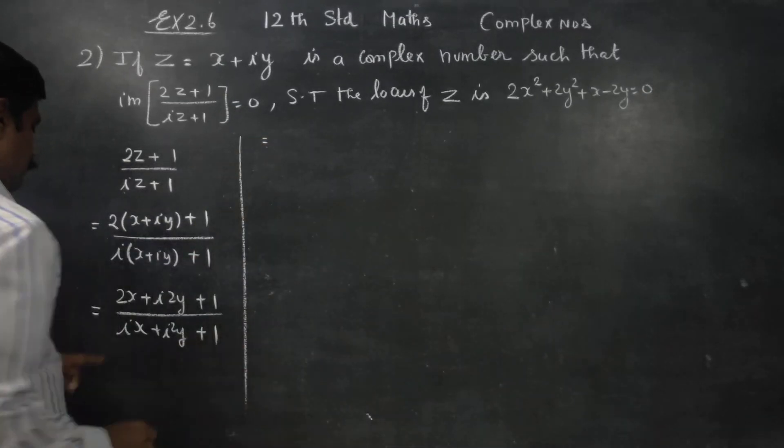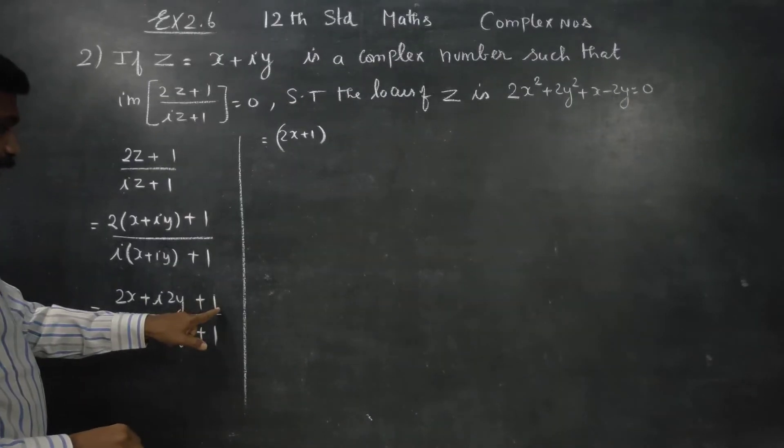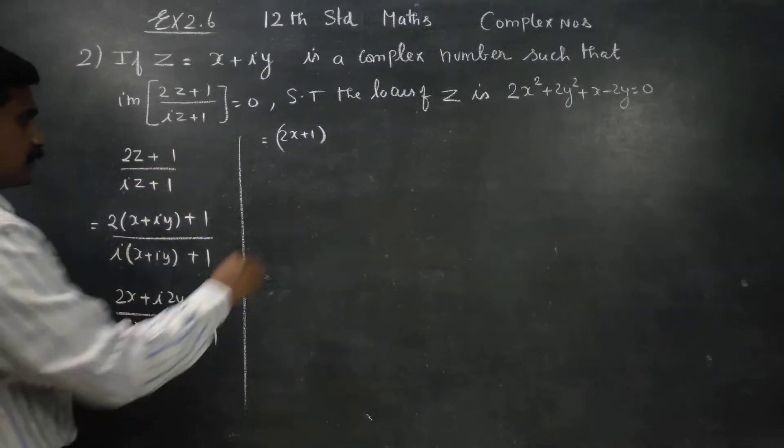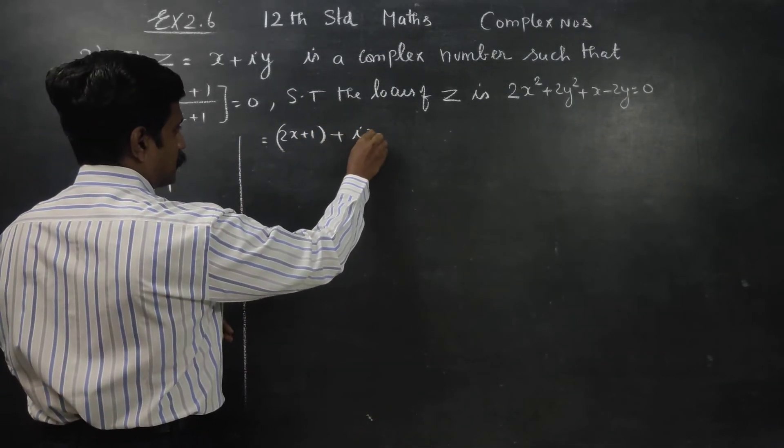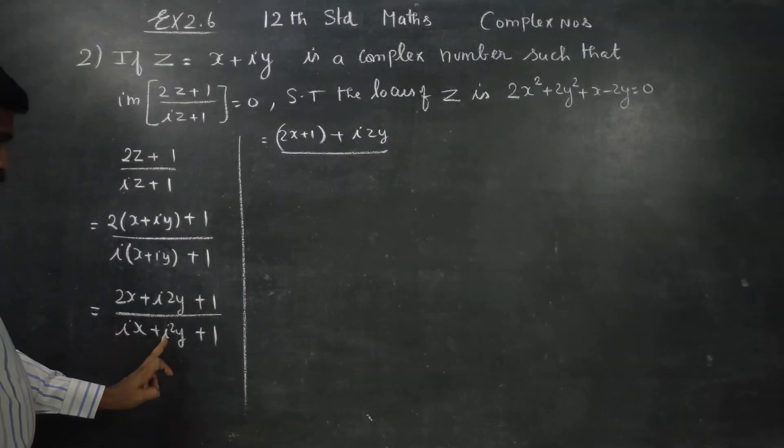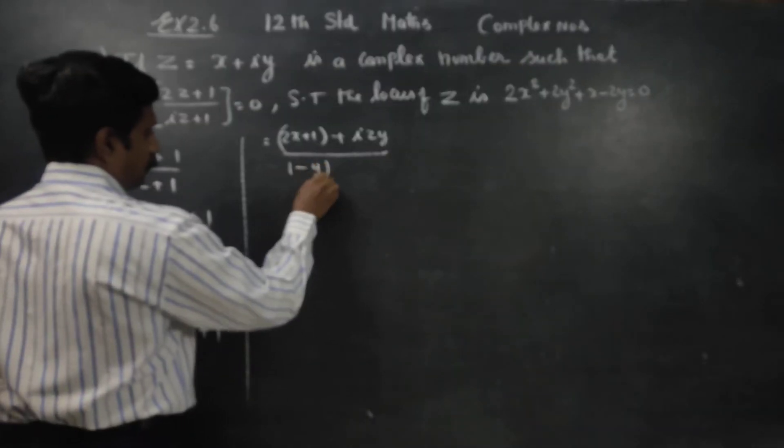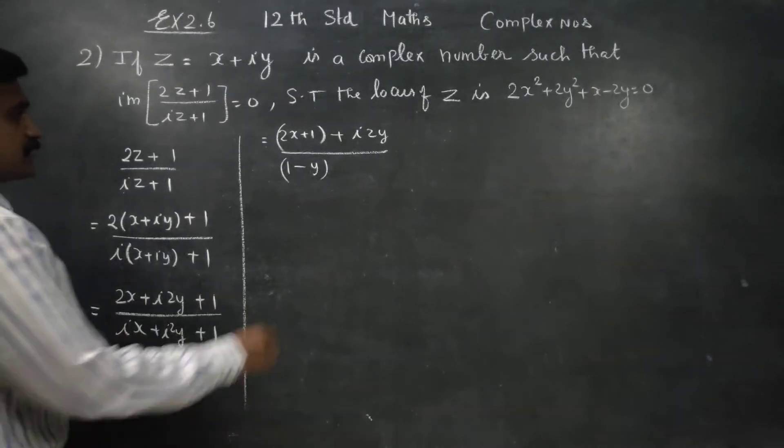This is equal to numerator, 2x plus 1, this is the real part. Imaginary, i into 2y by this is i square minus 1. minus 1 into y is minus y. 1 minus y is equal to 1 minus y plus ix.